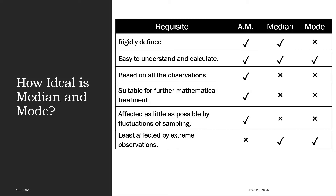How ideal are median and mode? Looking at the comparison table, arithmetic mean is a clear winner compared to median and mode. All three — mean, median, and mode — are easy to understand and calculate compared to geometric mean and harmonic mean, but none of them is ideal. Arithmetic mean has the most ticks but is affected by extreme observations. Median and mode are least affected by extreme observations but have their own weaknesses — for example, mode is not rigidly defined and you may have more than one mode for the same distribution.